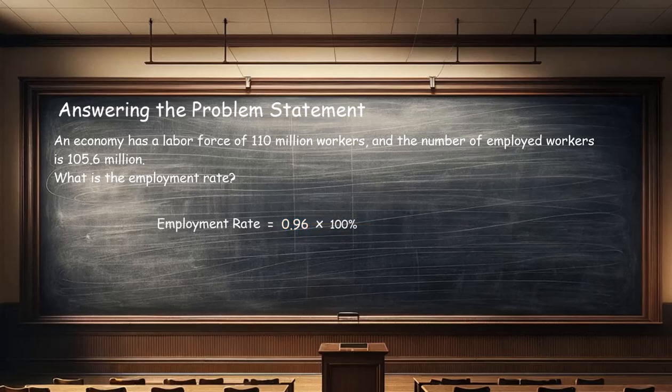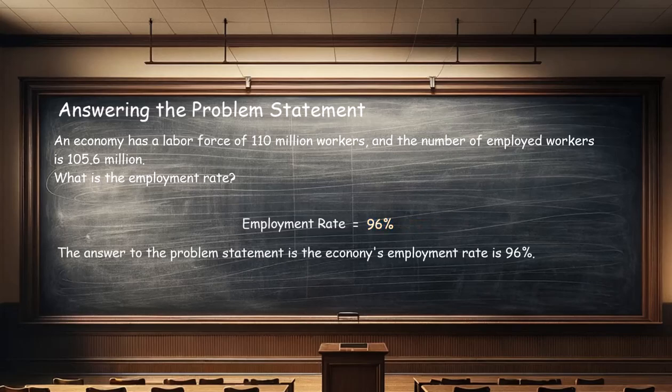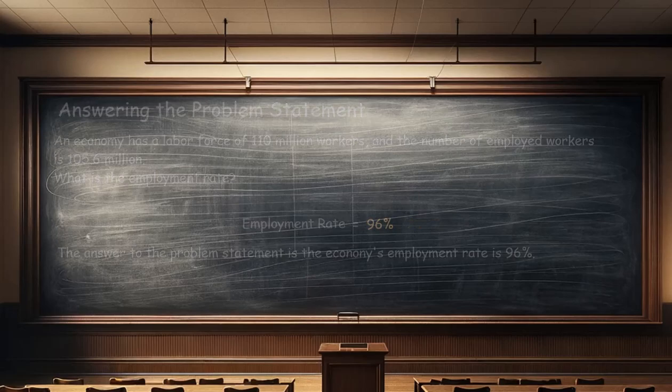Fifth, multiply by 100%. In this example, the number of employed workers divided by the labor force is 0.96, so multiplying 0.96 times 100% is 96%. The answer to the problem statement is the economy has a 96% employment rate.